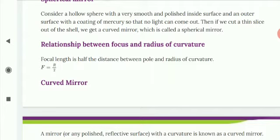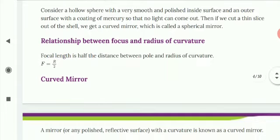For the formula, you can remember: f equals r upon 2, where f is the focal length and r is the radius of curvature or the center of curvature.